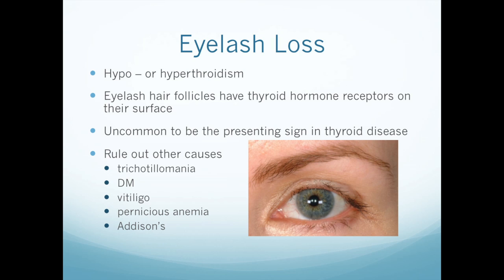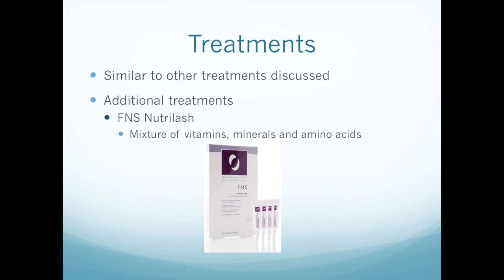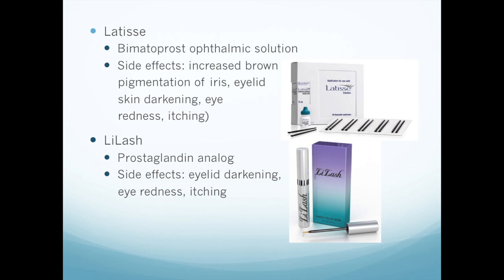This certainly can happen in thyroid disease. Treatments are the same as discussed before, although there are a lot of new products on the market now for eyelashes to either enhance, lengthen, or make thicker. One of them is FNS Neutralash — it's a mixture of vitamins, minerals, and amino acids. There's also Latisse, a bimatoprost ophthalmic solution that you apply to the eyelashes. Side effects include increased brown pigmentation of the iris, eyelid skin darkening, some redness and itching. Another product is LaLash, which is also a prostaglandin analog with a similar side effect profile.